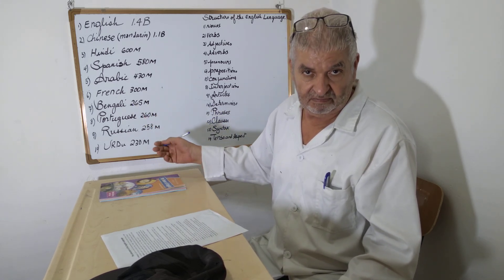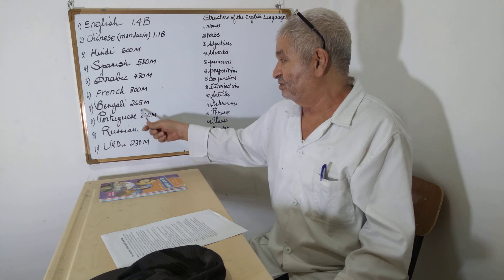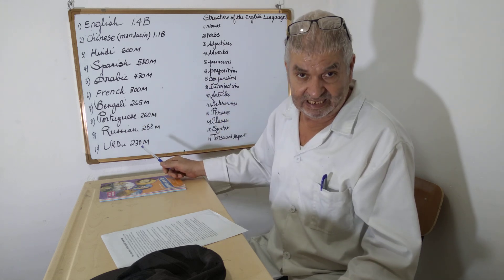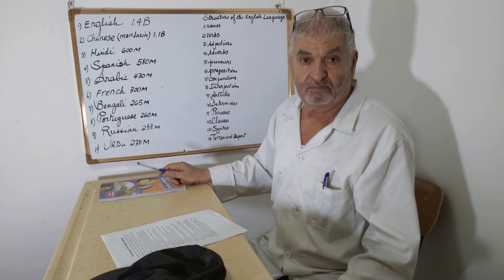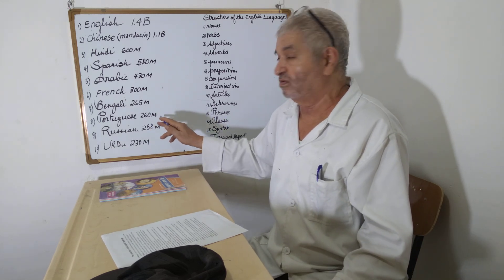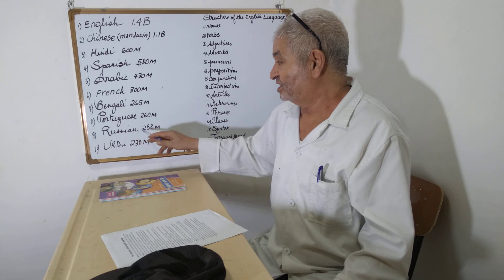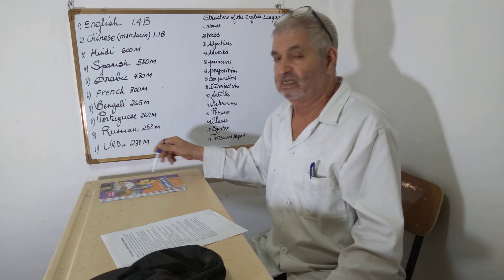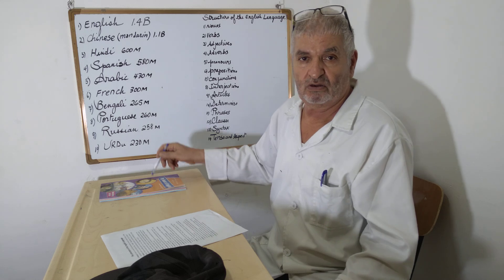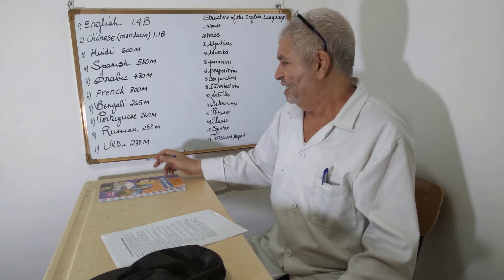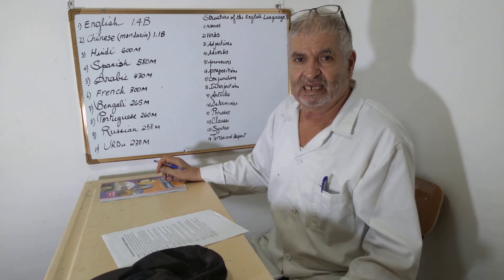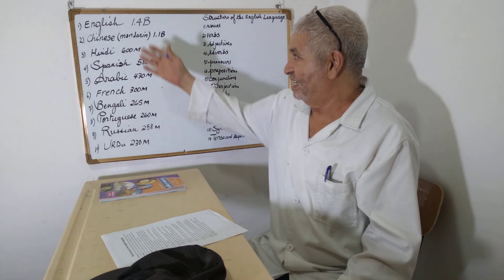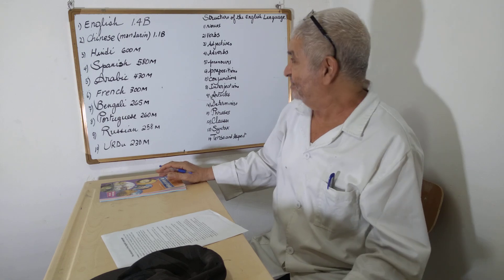Bengali has 265 million speakers. Then we have Portuguese, spoken in Brazil and also in Portugal. Russian has 258 million speakers. And at number ten is Urdu, spoken mainly in Pakistan. These are the top 10 most spoken languages, with English at the top.